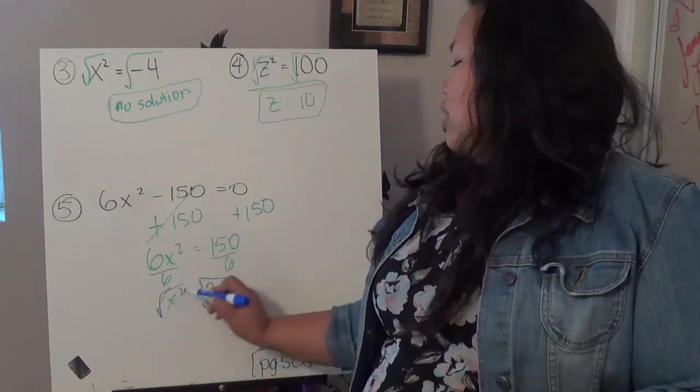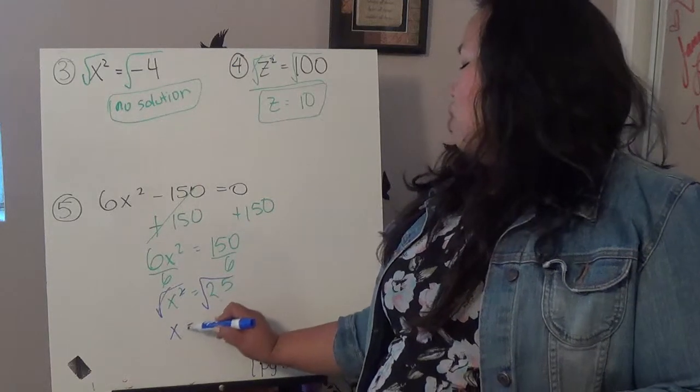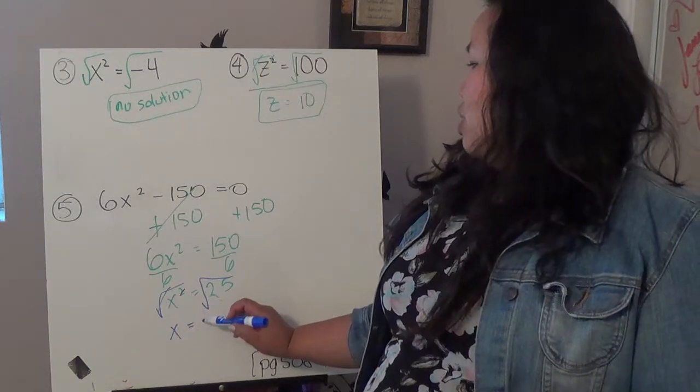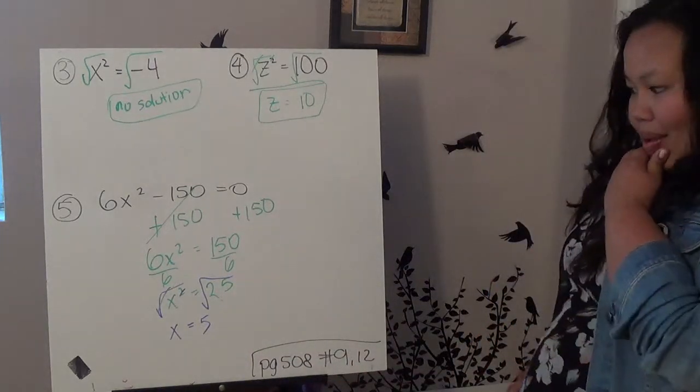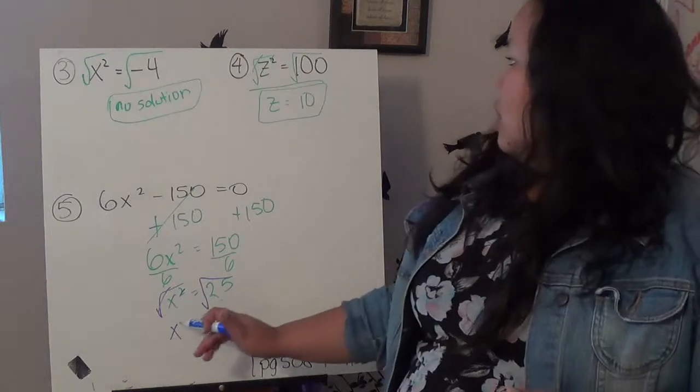So, this cancels out, leaving me with just x, and the square root of 25 is 5. So, this is my answer.